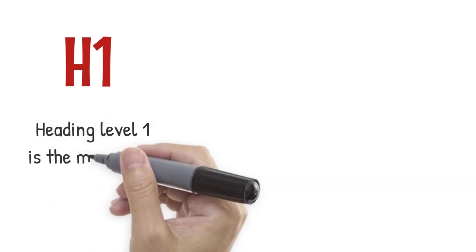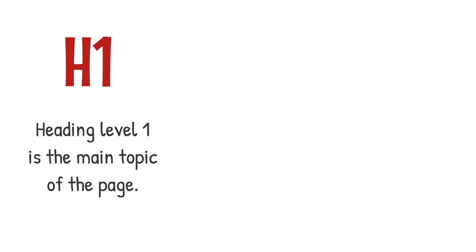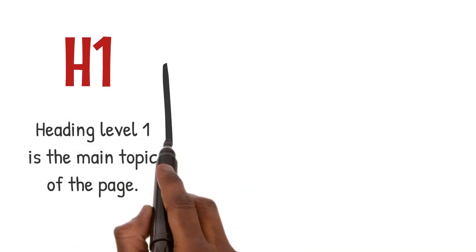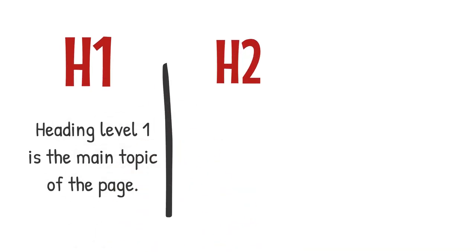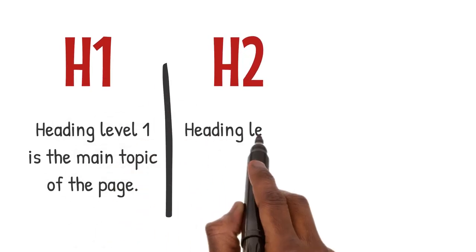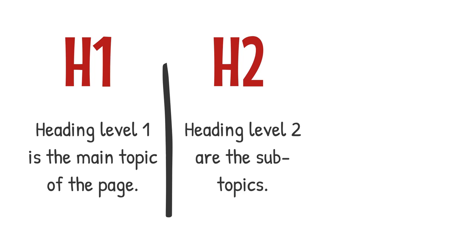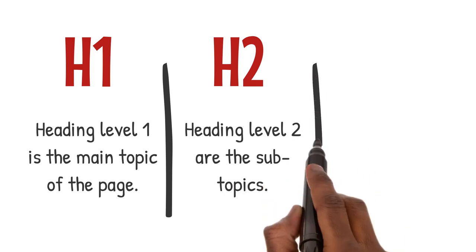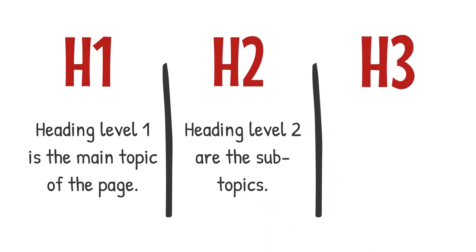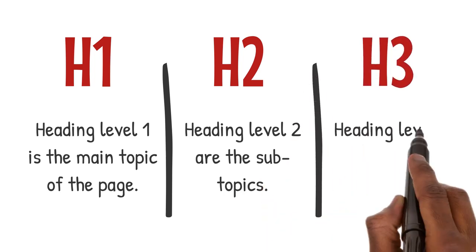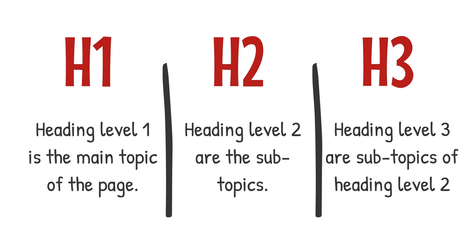Heading Level 1 is the main topic of the page. Heading Level 2 are subtopics, and you can have many subtopics on each page. Heading Level 3 are subtopics of Heading Level 2 — I guess you could say they are sub-subtopics.